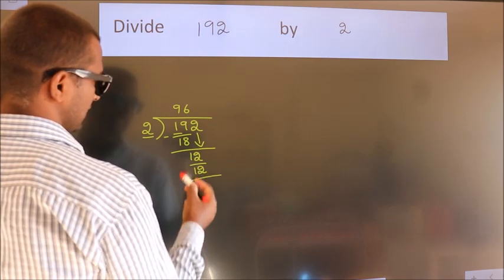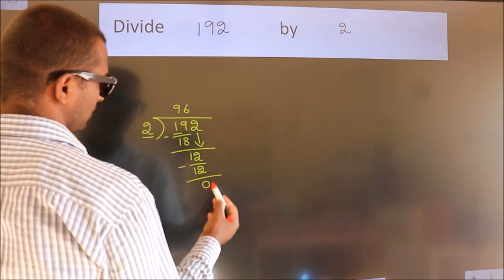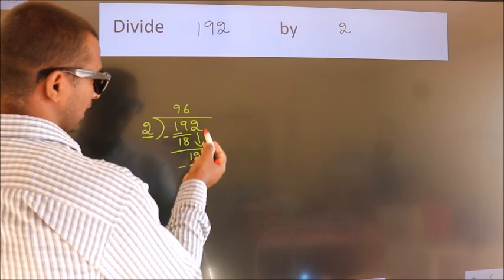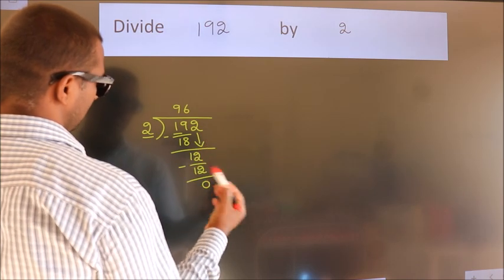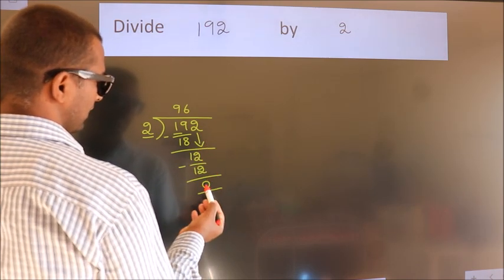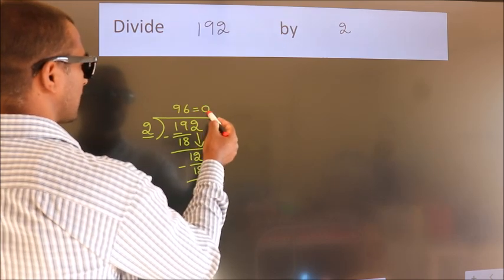Now we subtract. We get 0. After this, no more numbers to bring it down. And we got remainder 0. So this is our quotient.